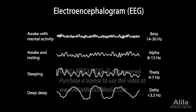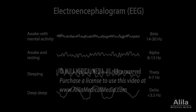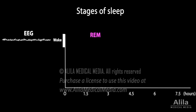There are two major phases of sleep: rapid eye movement, REM sleep, and non-rapid eye movement, non-REM sleep. Non-REM sleep progresses in three stages: N1, N2, and N3.